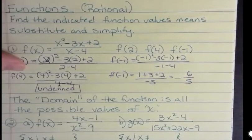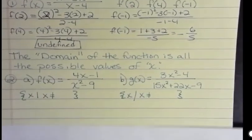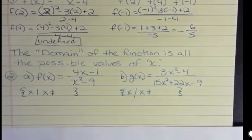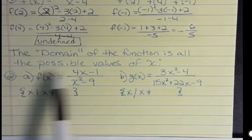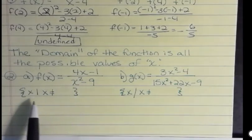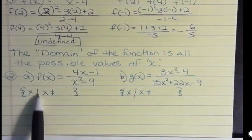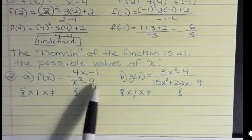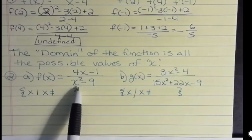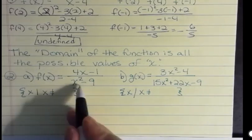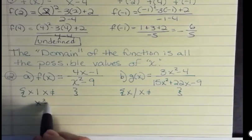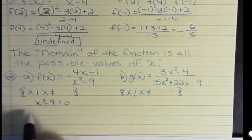If they ask you for the domain of a function, it's all the possible values of x. So if you look at this first one, they're saying, what is the domain of this function? Well, they ask you to state it in set builder notation, which is the set of all x such that x does not equal. What we're interested in is what can the x's not be here? It could be every x except one. And to figure that out, we're going to set our denominator equal to zero and solve.